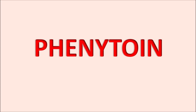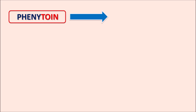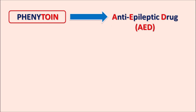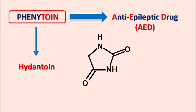Hi everyone. Today in this video we are going to discuss about phenytoin. Phenytoin is one of the well-known and old generation anti-epileptic drug, a class of drugs commonly known as AEDs. Within the name of this drug we can observe the suffix 'toin', which indicates this drug belongs to the hydantoin chemical category. Phenytoin is a hydantoin derivative.